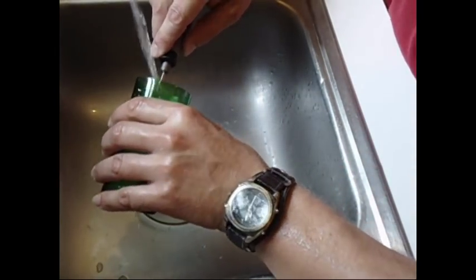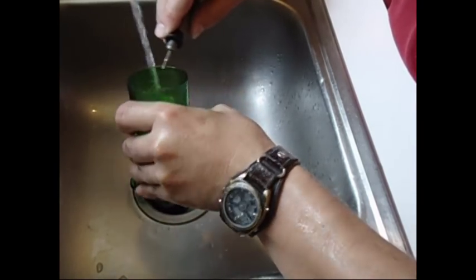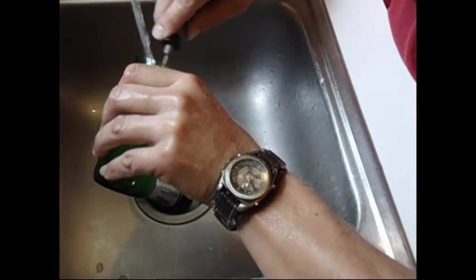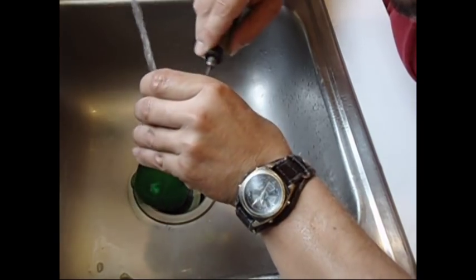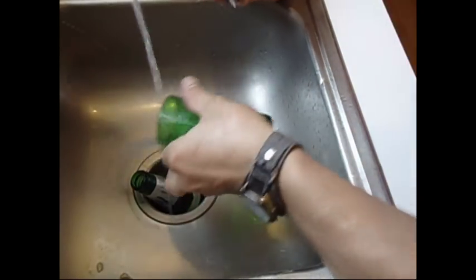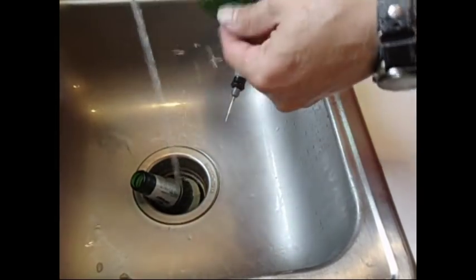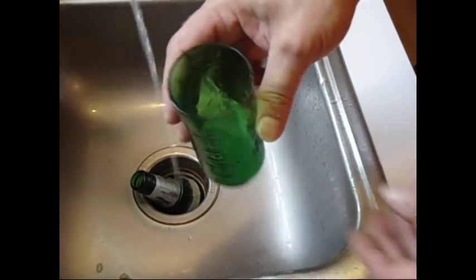And just go all the way on the inside and outside. Just round it over. There you go. It's perfectly dull. You can't get cut on that. So there's your drinking glass.